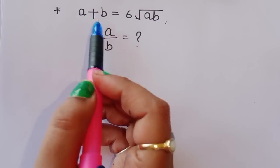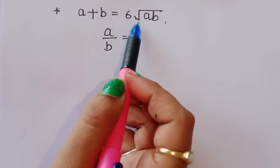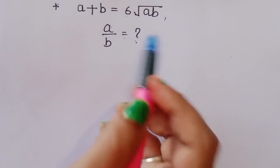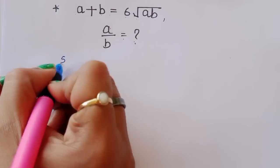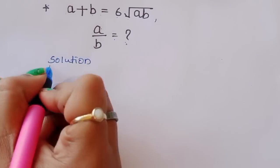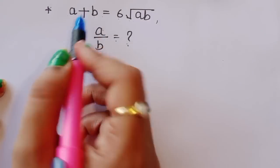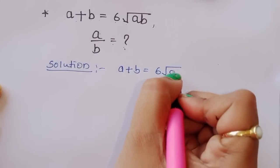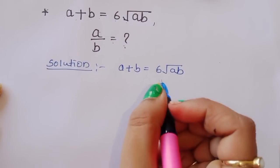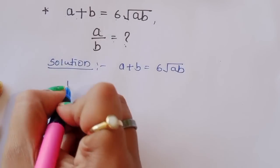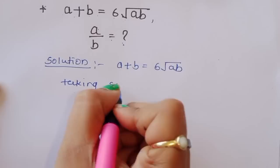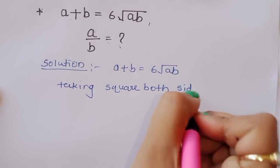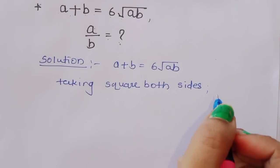The question is: given a plus b is equal to 6 root of ab, we have to find out the value of a upon b. Let's see the solution. First, what is given: a plus b is equal to 6 root of ab. We can take square of both sides.